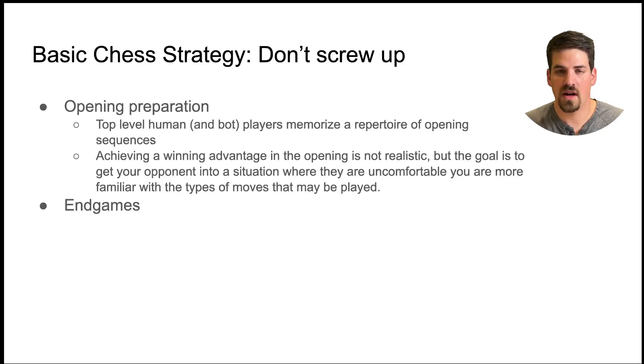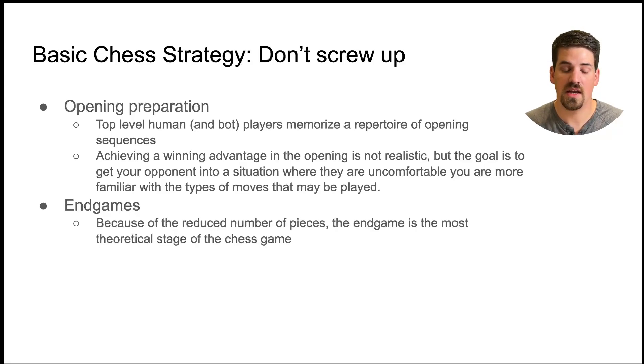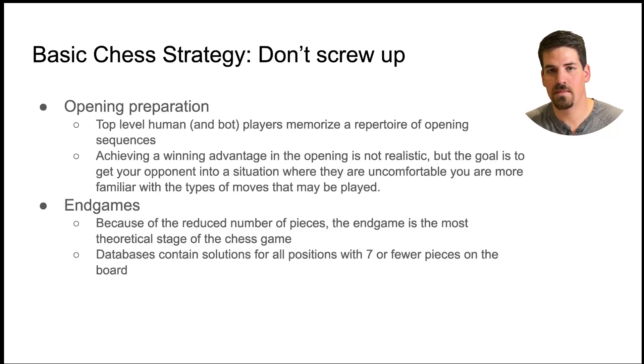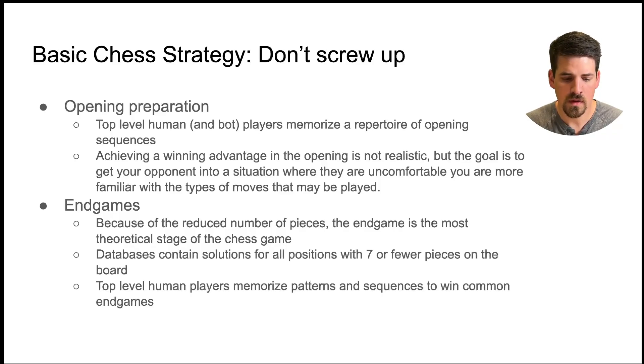End games are also another part of the game where top-level human players study and it's because the reduced number of pieces allow more analysis to be done and more complete analysis to be done. In fact databases contain all of the end game positions with seven or fewer pieces on the board and so we know for sure who's theoretically got the ability to win, lose, or draw in positions with seven or fewer pieces on the board. So the top-level human players memorize these patterns. They don't memorize all the specific positions but they memorize repeatable patterns and sequences to win common end games. An example would be the king and queen versus king end game. Something that would be very easy for a practiced player to win but it's surprisingly difficult for a novice player.